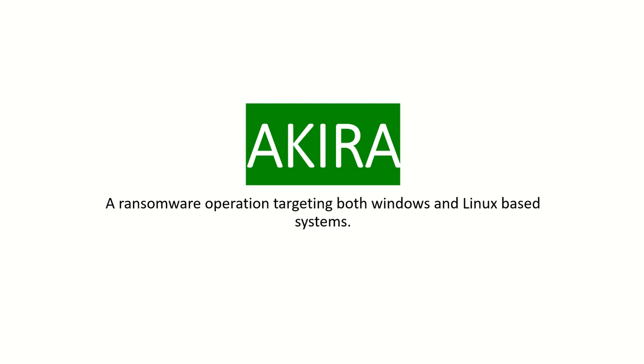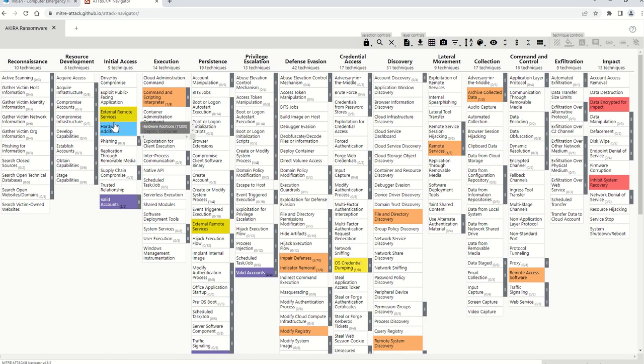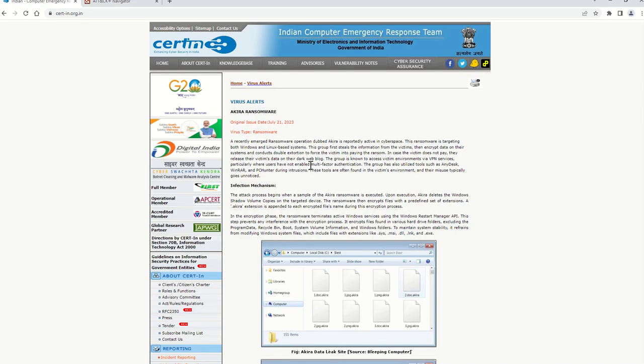Welcome to this short video on Akira ransomware. Akira is a ransomware operation currently targeting both Windows and Linux based systems. As per the virus alert released by CERT-In last Friday, this group has already targeted more than 16 companies in different verticals. In this campaign, the attackers are trying to steal information, encrypt data, and then demand ransom from the victims.